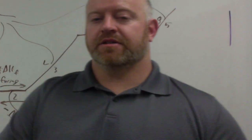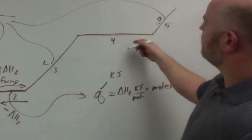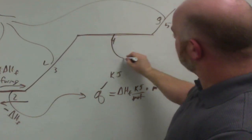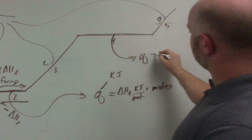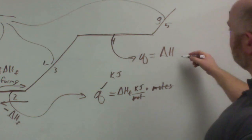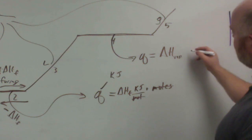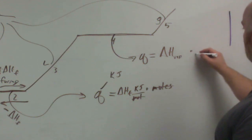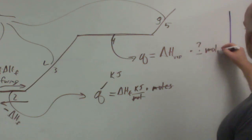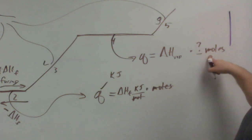So when you vaporize, going back to the board, same idea. At stage four, we have to solve for the Q being the change in enthalpy to vaporize times however many moles you have here.